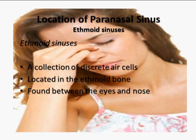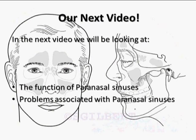Ethmoid sinuses are a collection of discrete air cells located in the ethmoid bone, found between the eyes and the nose. And that covers the different paranasal sinuses.